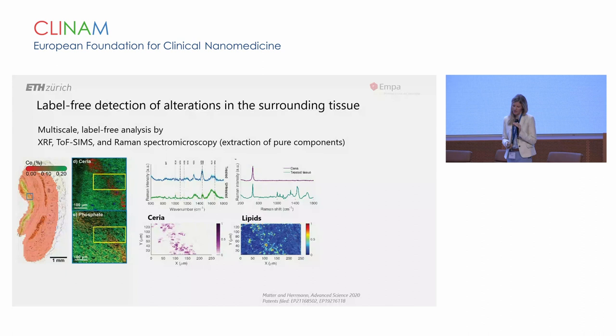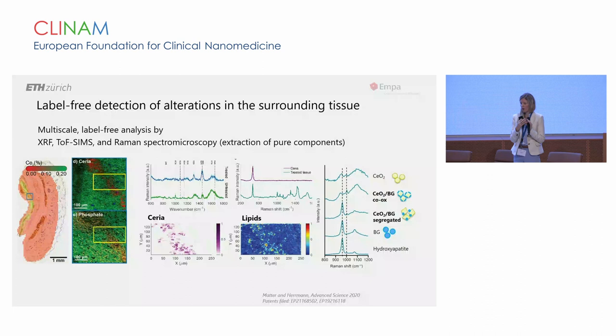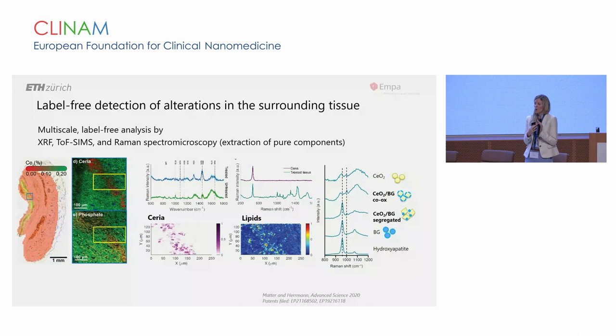We can correlate the cerium signature to signatures of lipids characteristic for macrophages in these tissues. We can also see how these particles change once they are in the tissue by looking at the Raman signatures. For example, the bioglass component, depending on the particle architecture, can either mineralize or not mineralize, which makes these particles tailored to either soft or hard tissue integration.